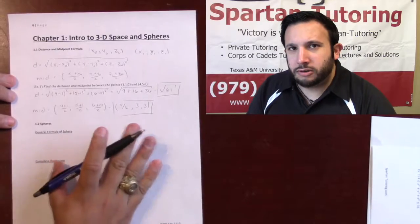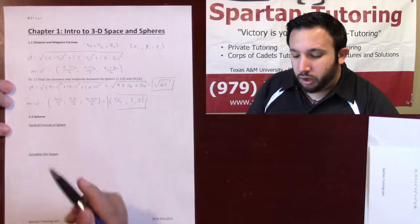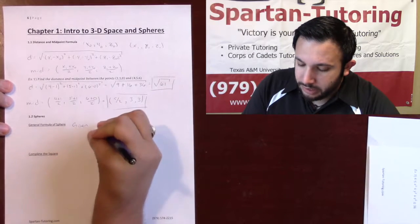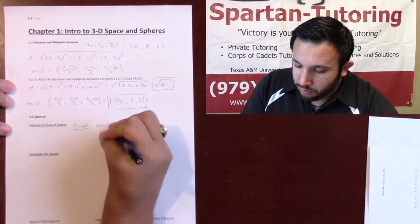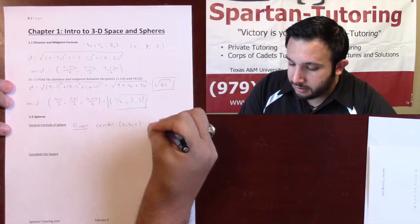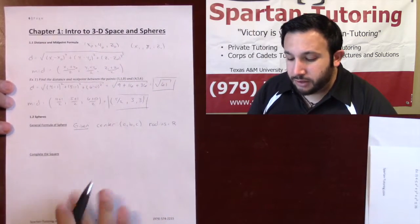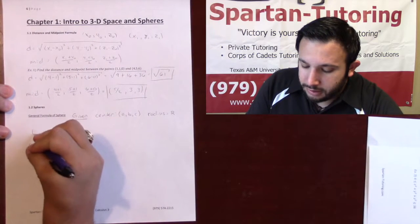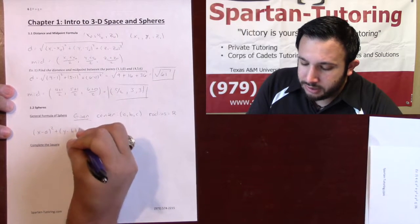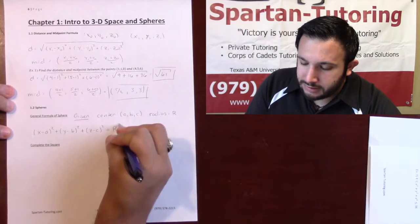That's how you find the distance and midpoint — very important to know. Now we also need to know the general formula of a sphere. If you're given some center — we'll call it the point (a, b, c) — and some radius R, the general formula is going to be (x minus a) squared plus (y minus b) squared plus (z minus c) squared equals R squared.